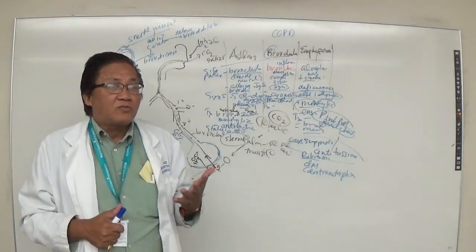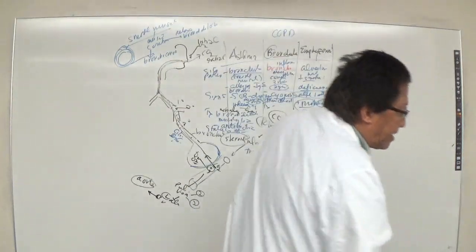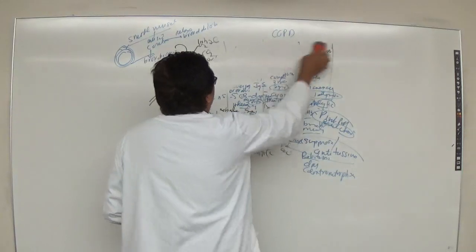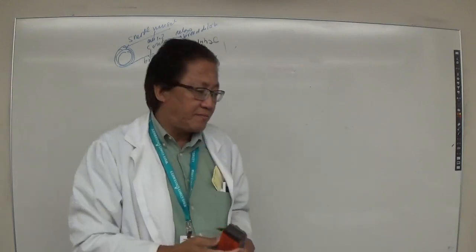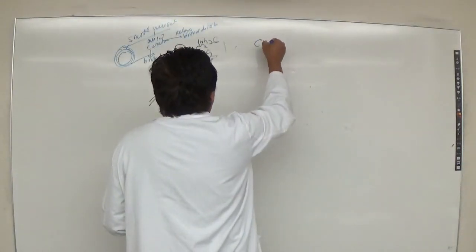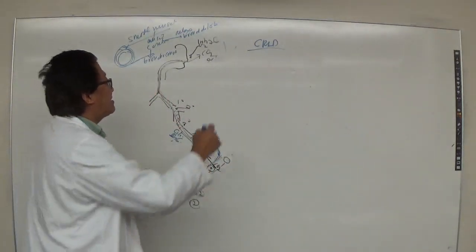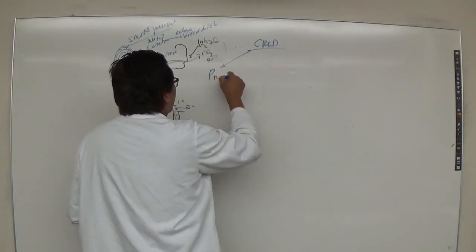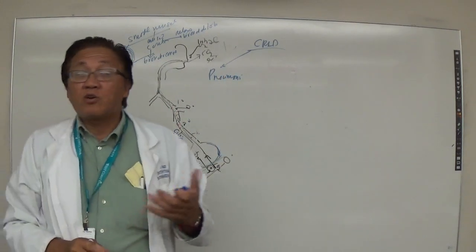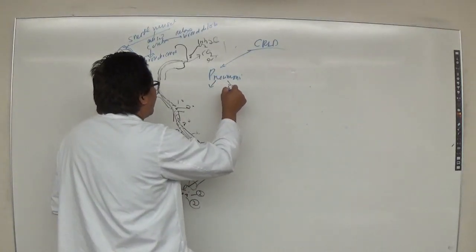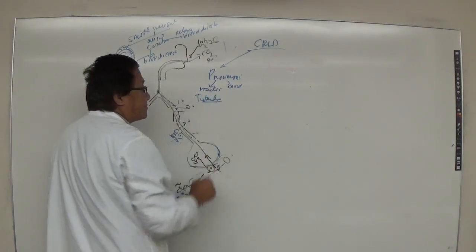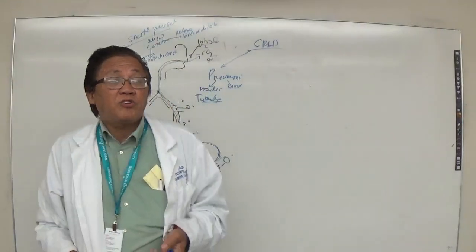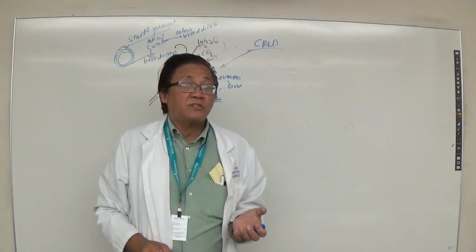Now let's talk about CRLD — chronic restrictive lung disease. This involves restriction of lung expansion rather than just airway obstruction. This does not include pneumonias involving the lung parenchyma. Under bacterial causes, we have chronic tuberculosis of the lung, caused by the organism Mycobacterium tuberculosis. It spreads via droplet spray when a patient coughs.